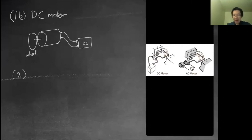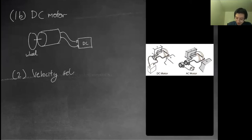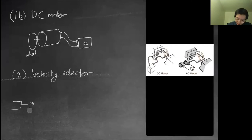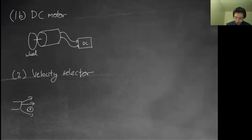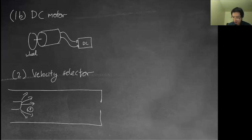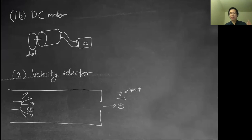The next application is a velocity selector. Imagine you have an electron gun shooting out charges with random velocities. You want a device that only allows particles with a specific velocity to pass through. To do this, you take advantage of both electric force and magnetic force.